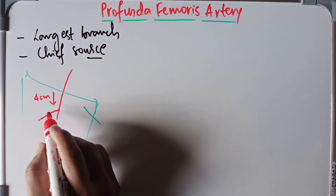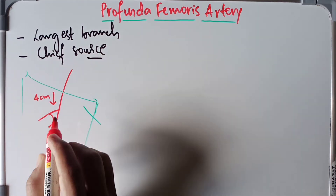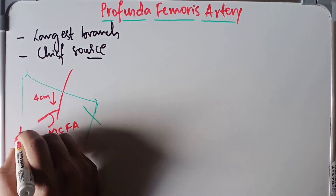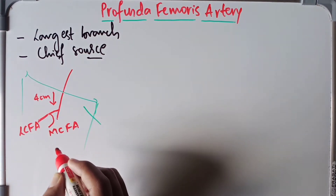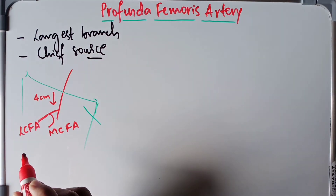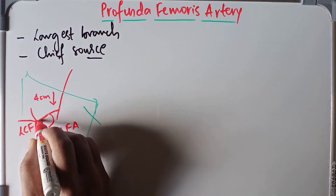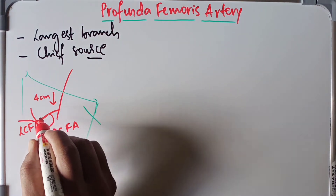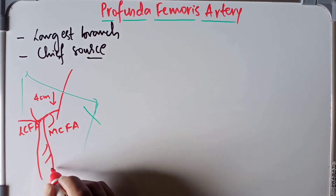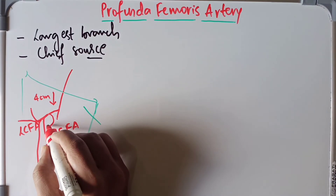About four centimeters below the inguinal ligament, the profunda femoris artery gives a branch known as the medial circumflex femoral artery, then continues as the lateral circumflex femoral artery. From the lateral circumflex femoral artery, we have three branches: the ascending branch, the transverse branch, and the descending branch. There is also a muscular branch and three perforating arteries, with the fourth perforating artery being the continuation of the profunda femoris itself.